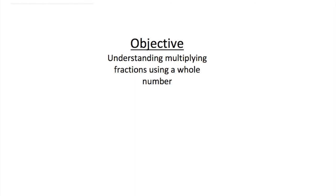Objective: understanding multiplying fractions using a whole number. The fractions we're going to use today are like two-thirds times six. Just keep in mind what a whole number is. The top number's name is always numerator, and the bottom name is denominator. That can get tricky because fractions are sometimes tricky for some kids.